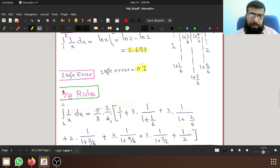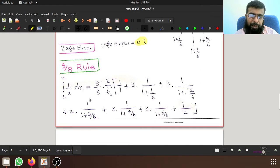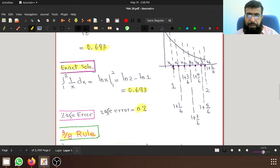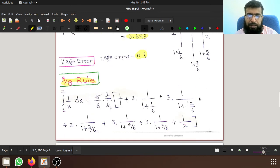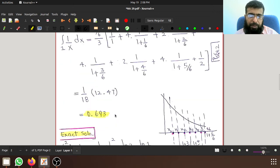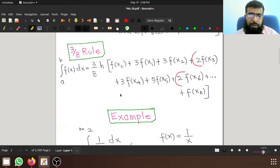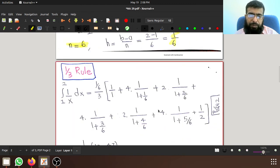Let's see what is the 3/8 rule and what answer do we get if we apply the 3/8 rule on the same problem. We have the same subintervals x naught, x1, x2 up to x6, and we plug these values in the 3/8 rule equation.